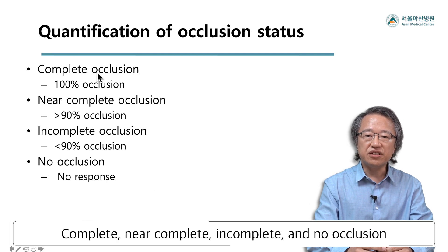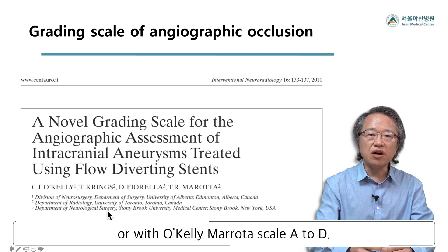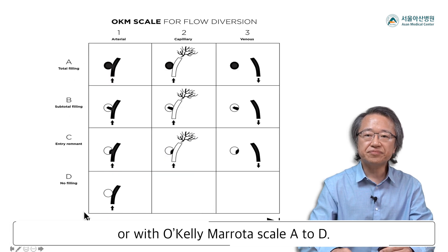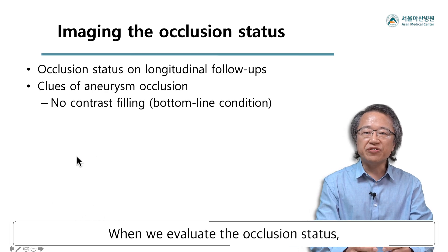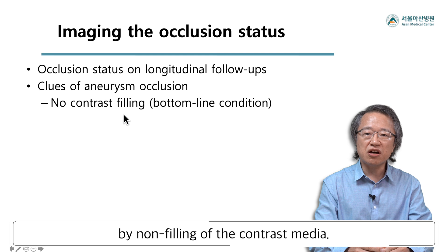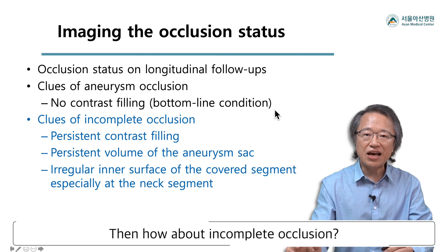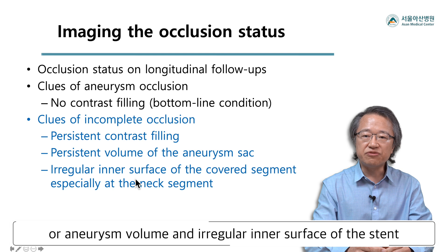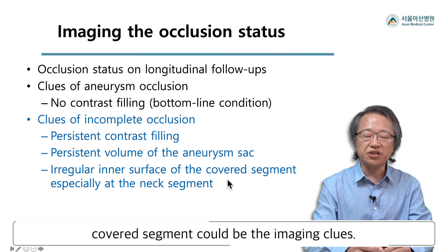Occlusion status can be categorized as complete, near-complete, incomplete, and no occlusion — or with the O'Kelley-Maruta scale A to D. When we evaluate the occlusion status, complete occlusion is easy to tell by non-filling of contrast media. For incomplete occlusion, persistence of contrast filling or aneurysm volume and irregular inner surface of the stent-covered segment could be the imaging clues.